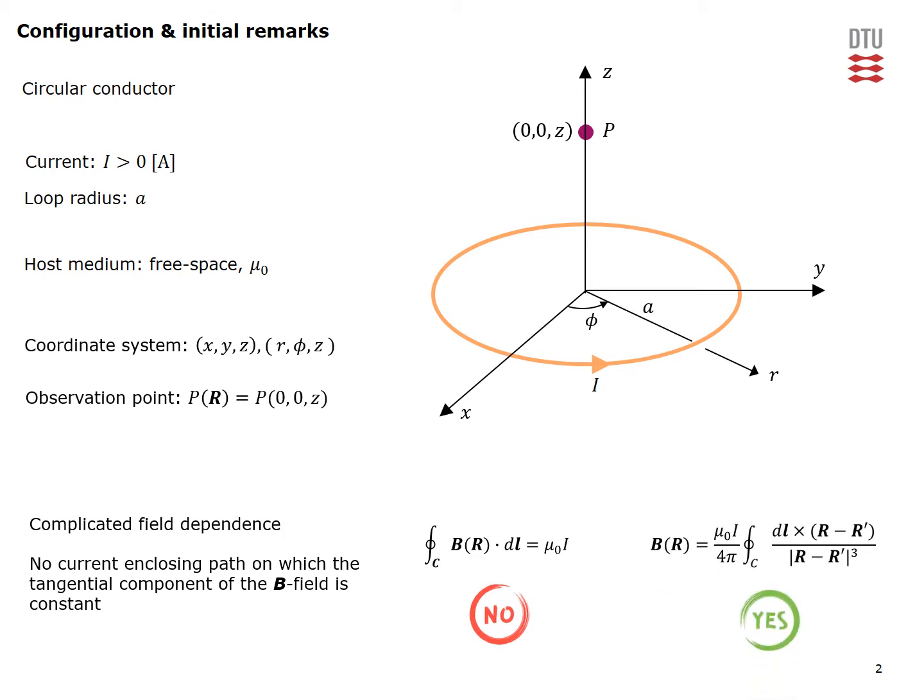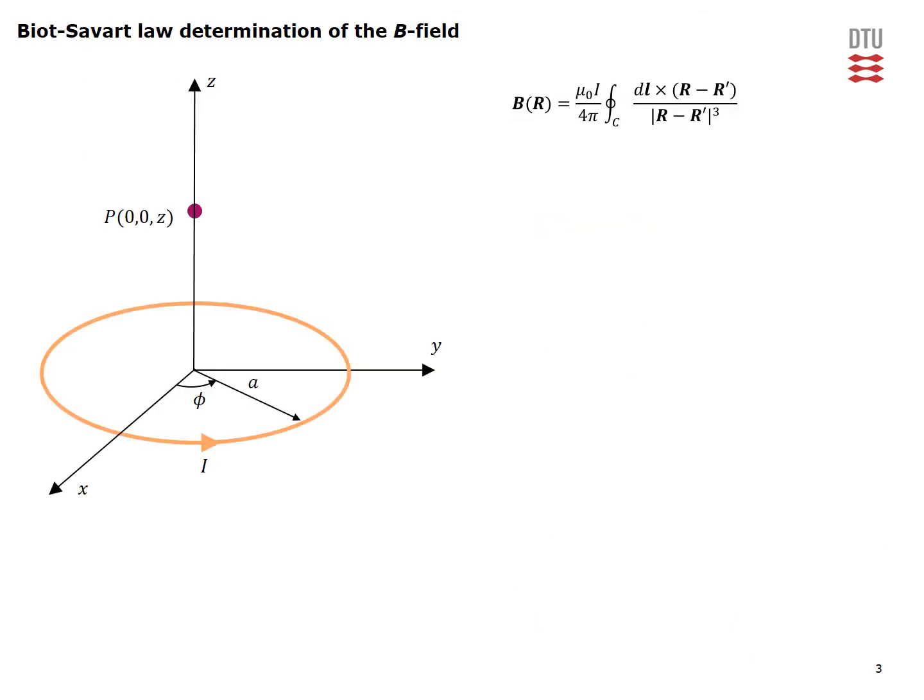Instead we will have to use Biot-Savart law which is shown here. This is our configuration again. In Biot-Savart law what is essential is to recognize that the DL element is a vector differential length on our current configuration.